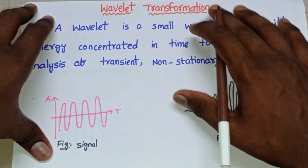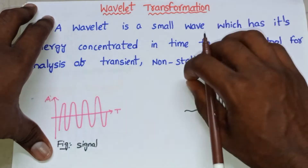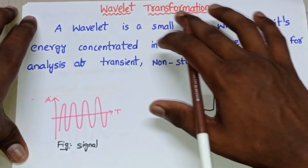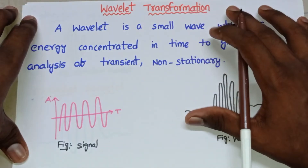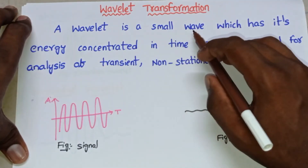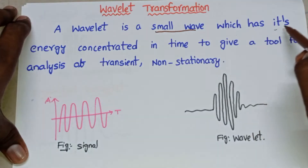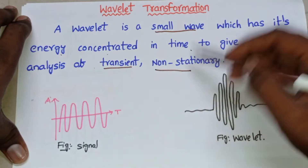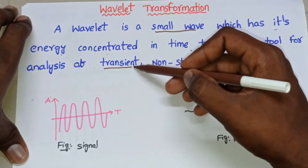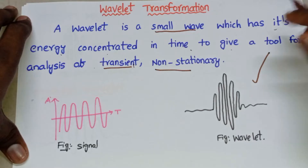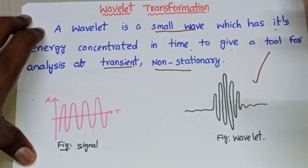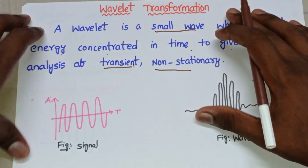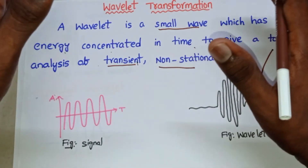Wavelet transform is used for non-stationary signals as well as stationary signals, which means it is applicable for both time-varying and non-time-varying signals. That's why wavelet transform is popularly used in daily applications. A wavelet is a small wave which has its energy concentrated in time, giving a tool for analysis of transient and non-stationary signals. Transient signals are the rising and falling signals, and in between the rise and fall we have steady state.